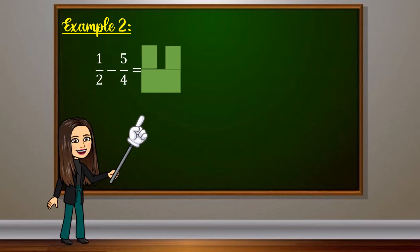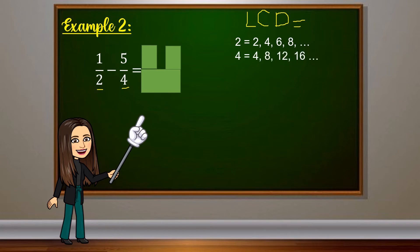Now we subtract fractions with different denominators. First, find the LCD of 2 and 4. Multiples of 2: 2, 4, 6, 8, and so on. Multiples of 4: 4, 8, 12, 16, and so on. The least common multiple is 4, so our LCD is 4. Then rewrite the fractions using LCD: 4 divided by 2 equals 2, and 2 times 1 equals 2, so 1 half becomes 2 fourths. For 5 fourths, the denominator is already 4, so it stays as 5 fourths.